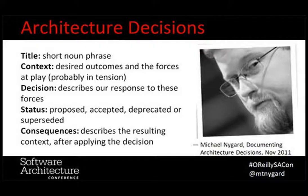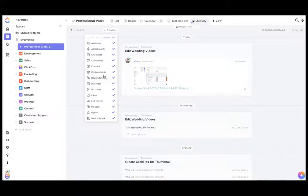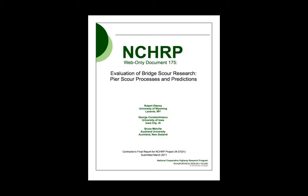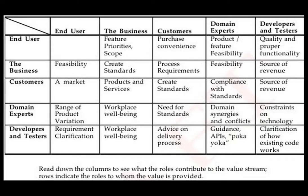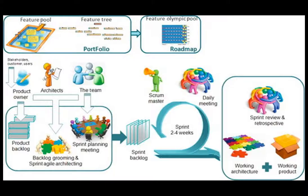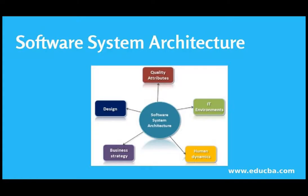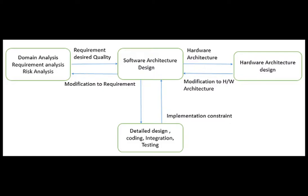Software Architecture Topics: Software Architecture Description. Software Architecture Description involves the principles and practices of modeling and representing architectures, using mechanisms such as architecture description languages, architecture viewpoints, and architecture frameworks.